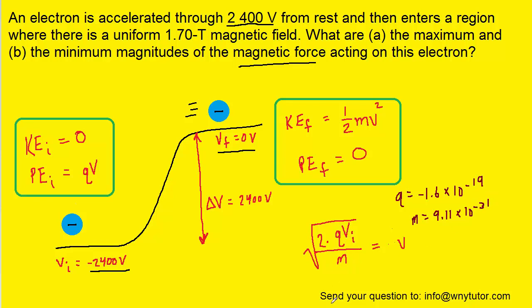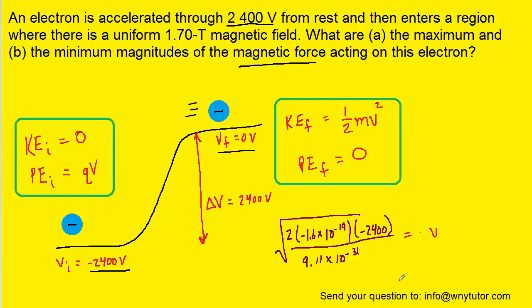So we can plug in all three known values now. And when you process all that on your calculator, you should obtain a speed of roughly 2.90 times 10 to the positive 7 meters per second. So that's the speed that we need when we are going to calculate the magnetic fields in A and B. So let's do that next.